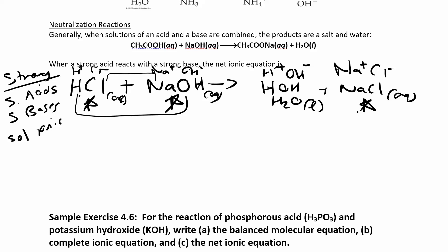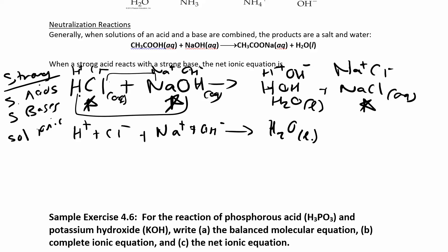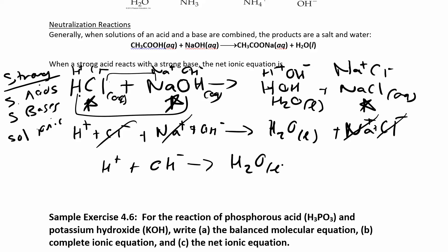So I have three strong electrolytes, and water is a non-electrolyte — it stays together. When I write the ionic equation, I split up the strong acid, split up the strong base, liquid water stays together, and sodium chloride also dissociates. Now what's the same on both sides? I have sodium+ on both sides and chloride ions on both sides. So my net ionic equation is: H+(aq) + OH−(aq) → H2O(l).